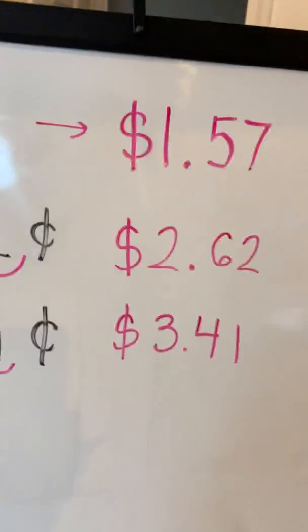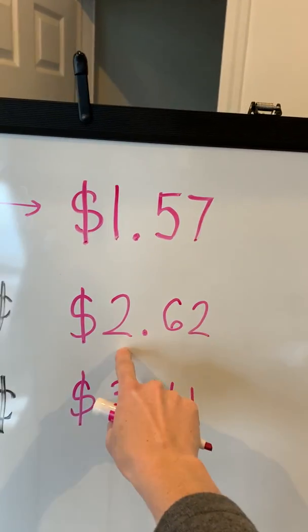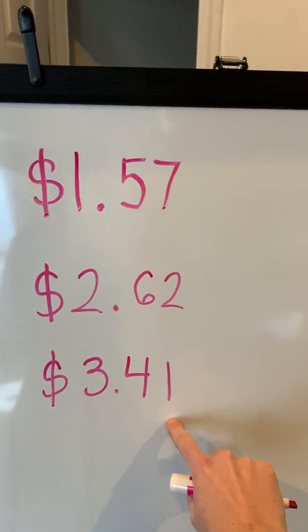You'll always have two numbers on the right side of your decimal point, those are the cent signs, so only ever a tens column and a ones column for cents. Everything else beyond that gets to be dollars. So, $1.57, $2.62, $3.41.